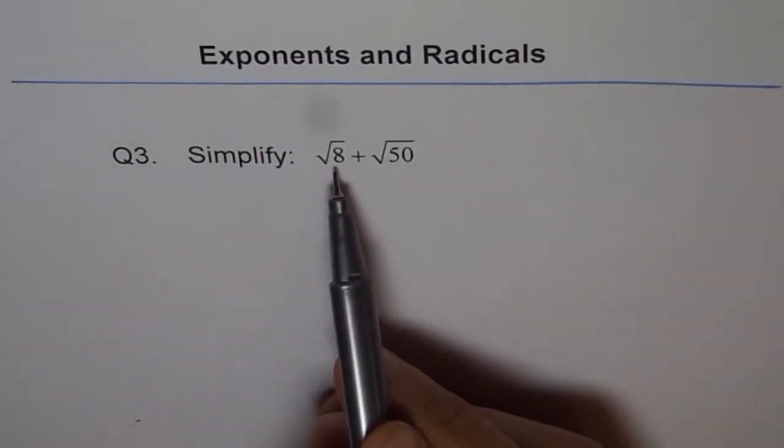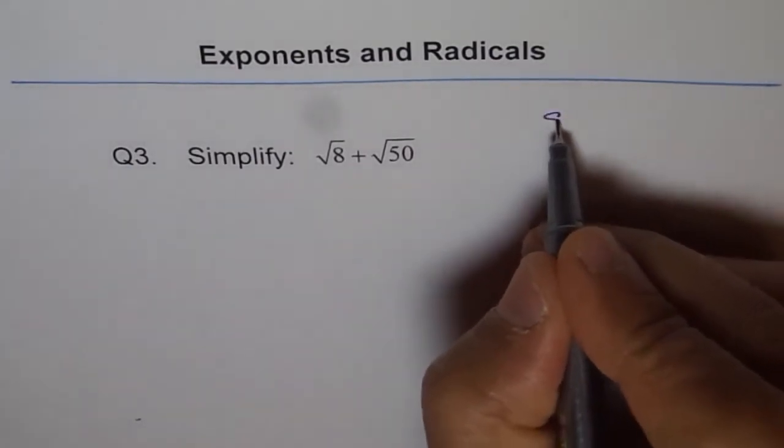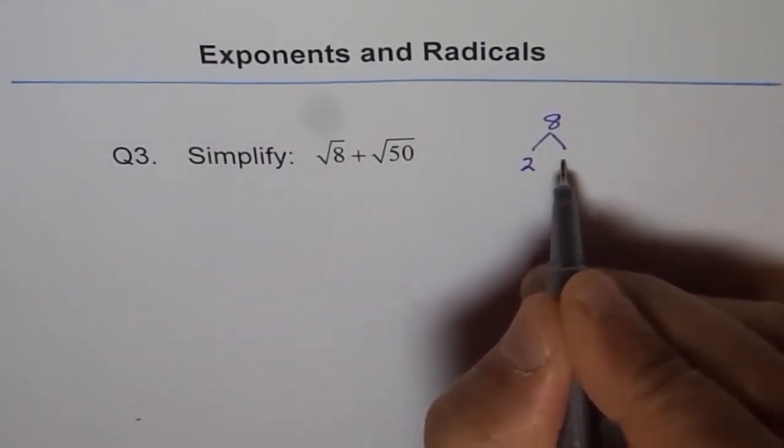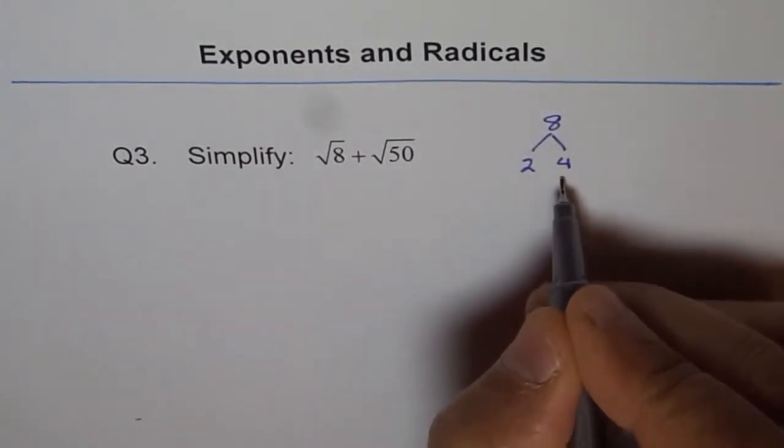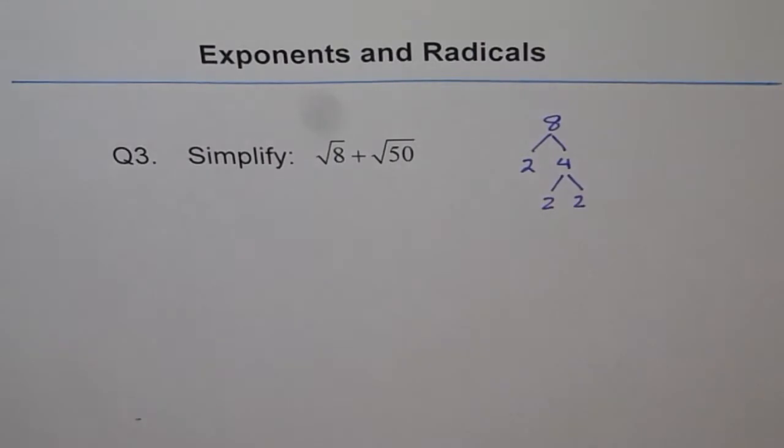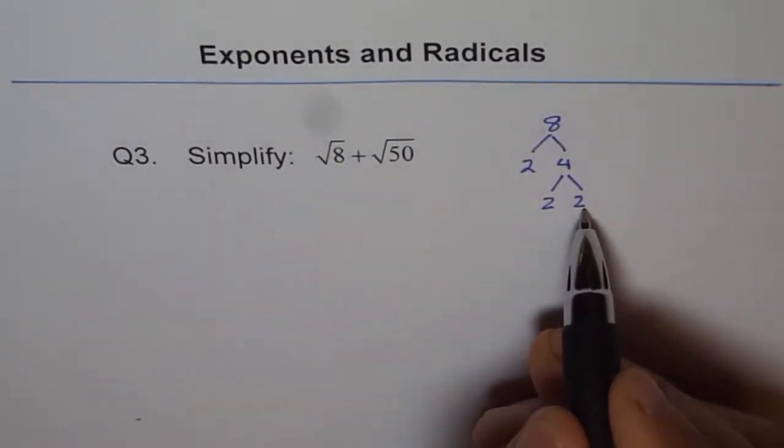So let's do prime factorization of 8. So 8 prime factorization is kind of like this. 8 equals 2 times 4, and now 4 can be written as 2 times 2. So the prime factorization of 8 is 2 times 2 times 2.